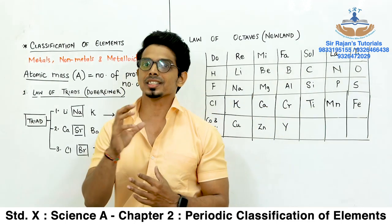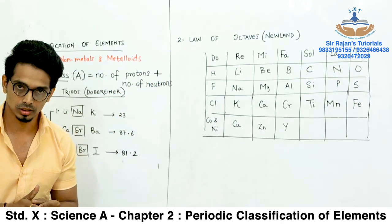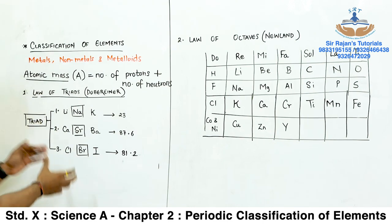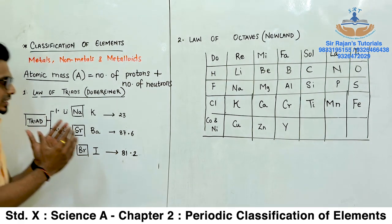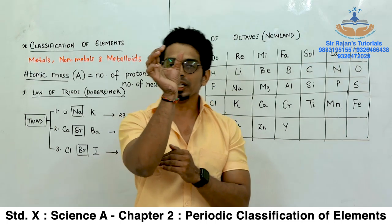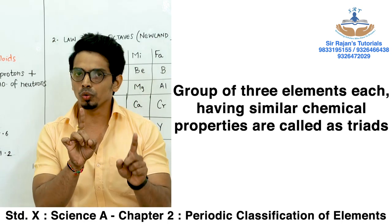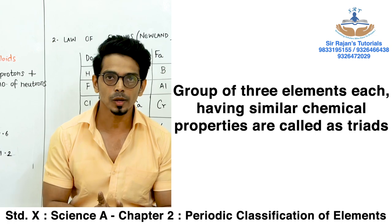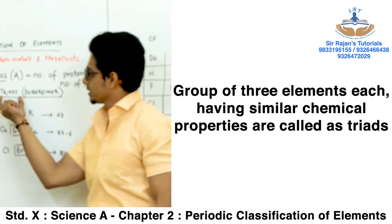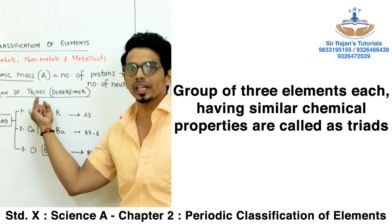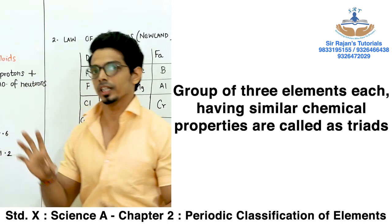After arranging by atomic mass, the second step was to relate their chemical properties. After writing the chemical properties, he started putting 3 elements in one particular group. These 3 elements showed very similar chemical properties, and this particular group of 3 elements is referred to as a triad. One example: when you talk about lithium, sodium and potassium — today we know based on the modern periodic table that all three are alkali metals with strong reactivity with both oxygen and water.